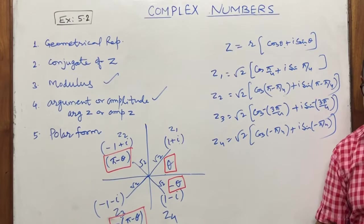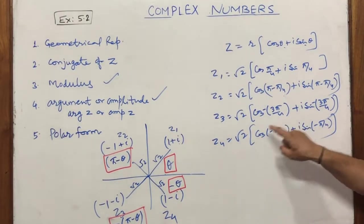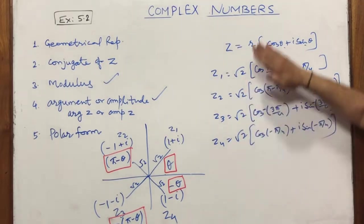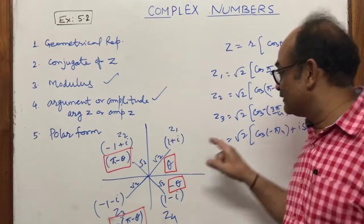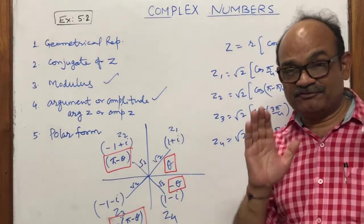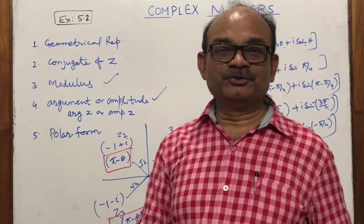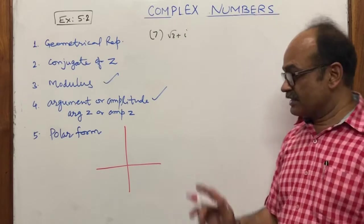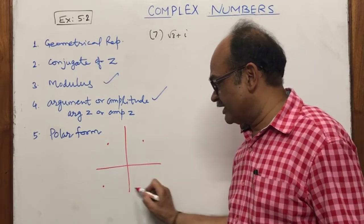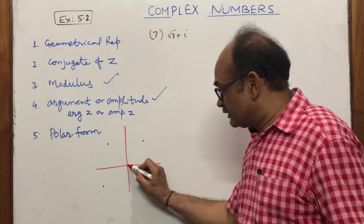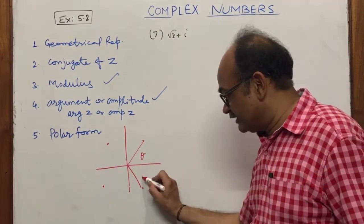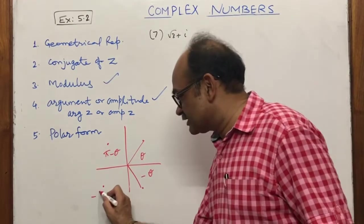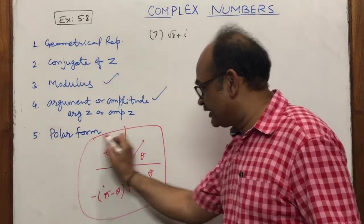Recall that sin(−θ) = −sin θ and cos(−θ) = cos θ. You can simplify further using these identities, but do not substitute numerical values or you will just return to the original complex number. The key steps are: first, calculate the modulus; second, identify the quadrant and calculate the argument using the quadrant rules; then write the polar form.